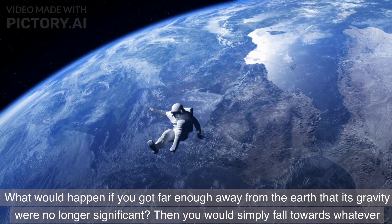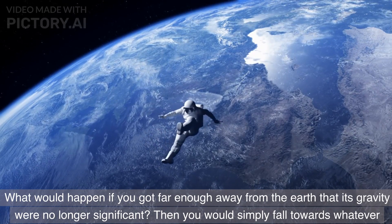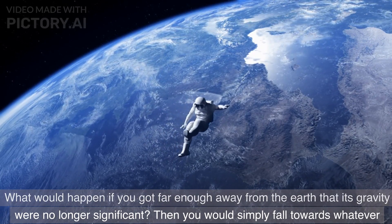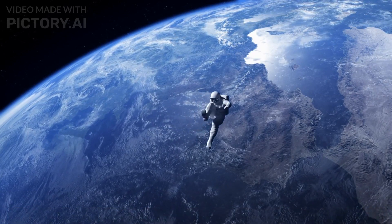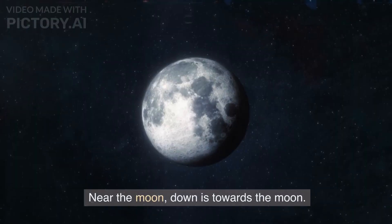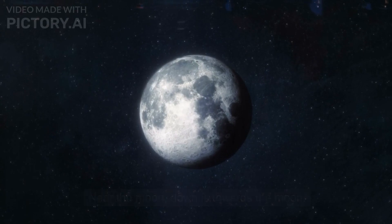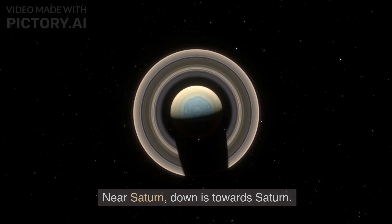What would happen if you got far enough away from the Earth that its gravity were no longer significant? Then you would simply fall towards whatever body has the strongest gravity. Near the moon, down is towards the moon. Near Saturn, down is towards Saturn.